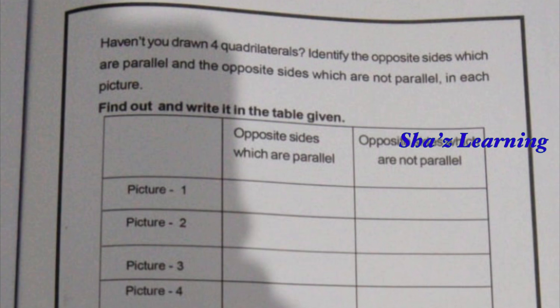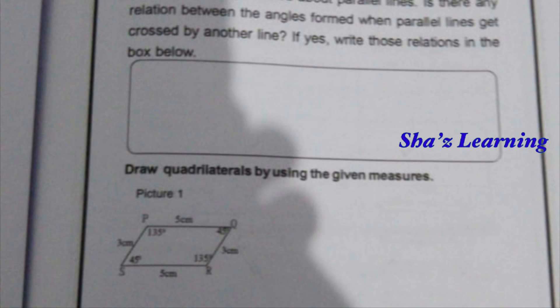First, we will analyze picture 1. The opposite sides that are parallel and those that are not parallel. Here is picture number 1. PQ is parallel to SR — those are the opposite sides which are parallel. PQ is not parallel to QR — those are the opposite sides which are not parallel.